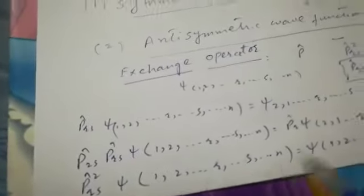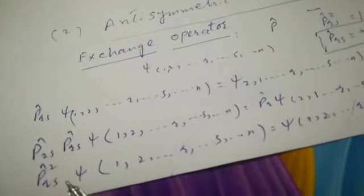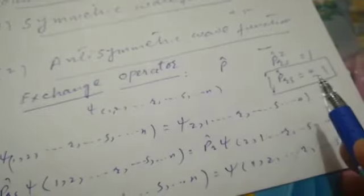Cancelling the wave function from both sides, we obtain P_r squared equals 1. Taking the square root, P-cap of r equals plus or minus 1. So the eigenvalues of the exchange operator are plus one and minus one.